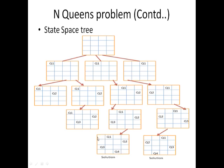Checking the final result: Queen 1 — no more queen should be placed in the corresponding rows, columns, or diagonals. Queen 2 — no more queen in corresponding rows, column, and diagonal. Queen 3 — no more queen in corresponding row, column, and diagonals. Queen 4 — no more queen in corresponding rows, column, and diagonals. All constraints are satisfied.